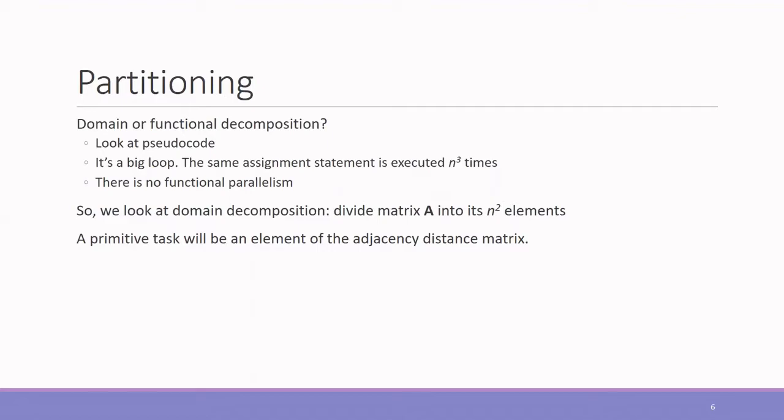We are going for the parallel implementation of Floyd's algorithm. So the first step will be partitioning. Should we go for domain decomposition or functional decomposition? When you see the pseudo code, you can see that it is a nested loop of order n cubed. And there is only one assignment statement. So there is no functional decomposition possible here. So we are going for domain decomposition. So we have the adjacency matrix, the whole data here, which has to be decomposed into n squared elements. So the primary task will be the element in that adjacency matrix.